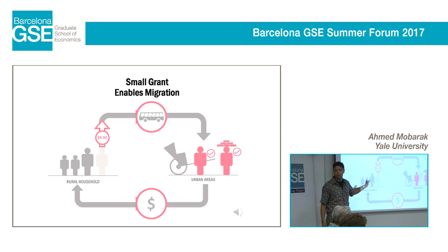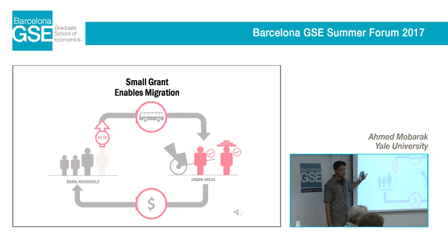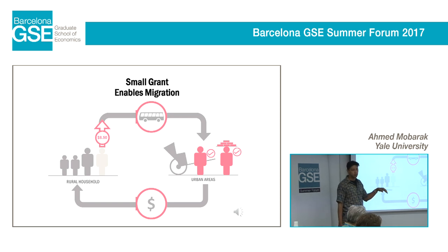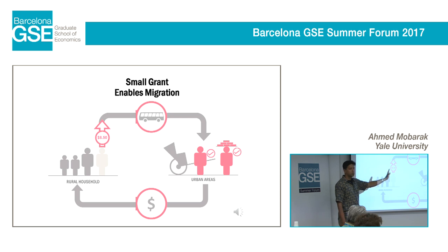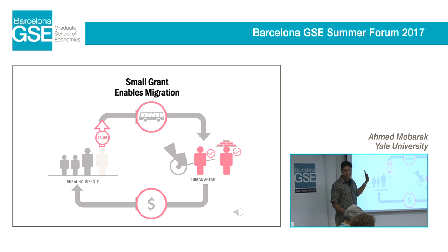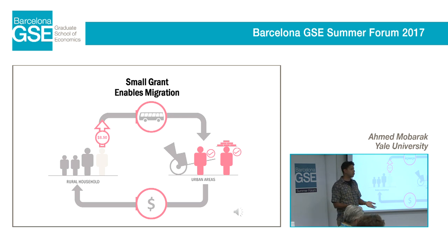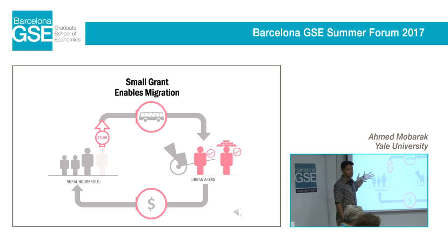The reason we focused on seasonal migration is that this is most sensible to do during the lean season in the rural area. Urban markets are not very seasonal, but in the rural agrarian economy you have lots of work during harvest in January and labor demand in August when you plant. But in between — September, October, November, December — labor demand is low because the structure of the economy is such that you're mostly waiting for the crop to grow. There's much less work and wages fall. So this is the most sensible time to try this out.